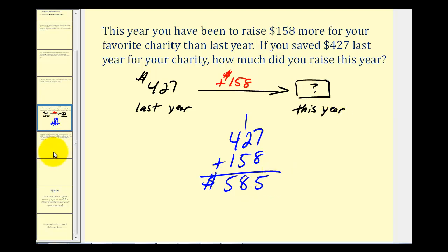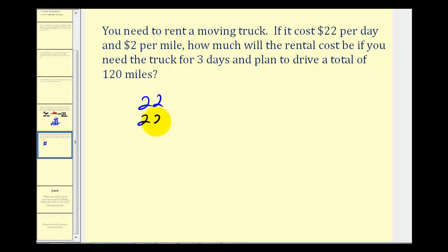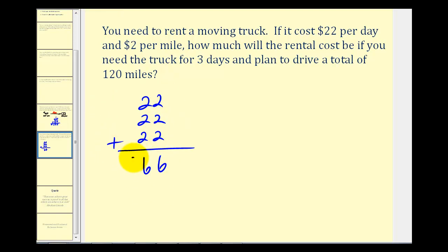Now let's say you need to rent a moving truck. If it costs twenty-two dollars per day and two dollars per mile, how much will the rental cost be if you need the truck for three days and plan to drive a total of one hundred twenty miles? You have a fixed cost of twenty-two dollars per day and a variable cost based on how much you drive. For three days: twenty-two dollars for each day, or the product of twenty-two and three, gives us sixty-six dollars as the fixed cost. For the mileage cost, we'll take one hundred twenty and multiply it by two dollars.